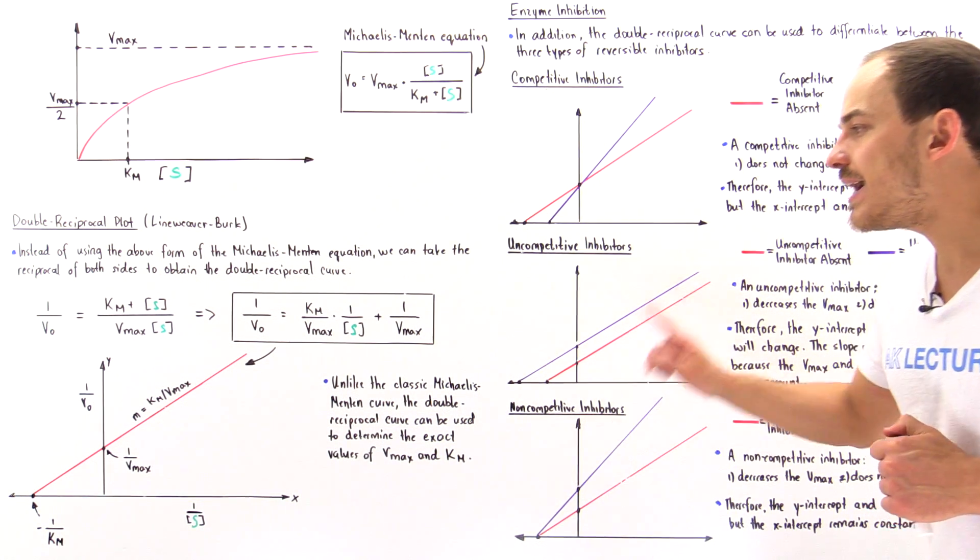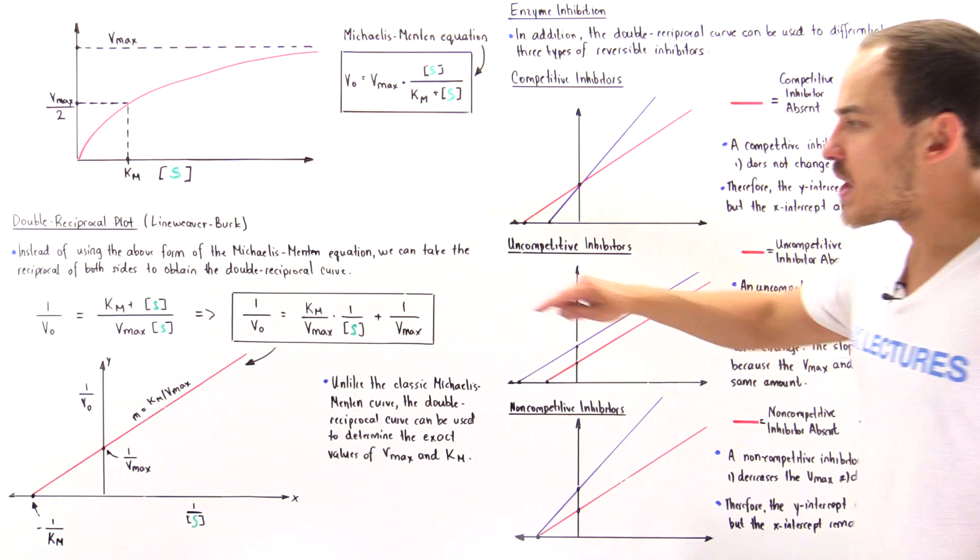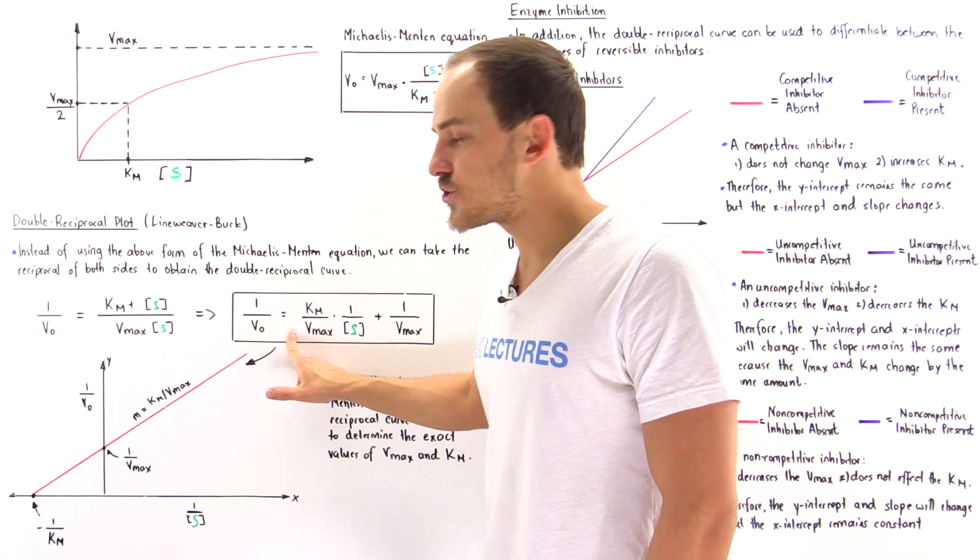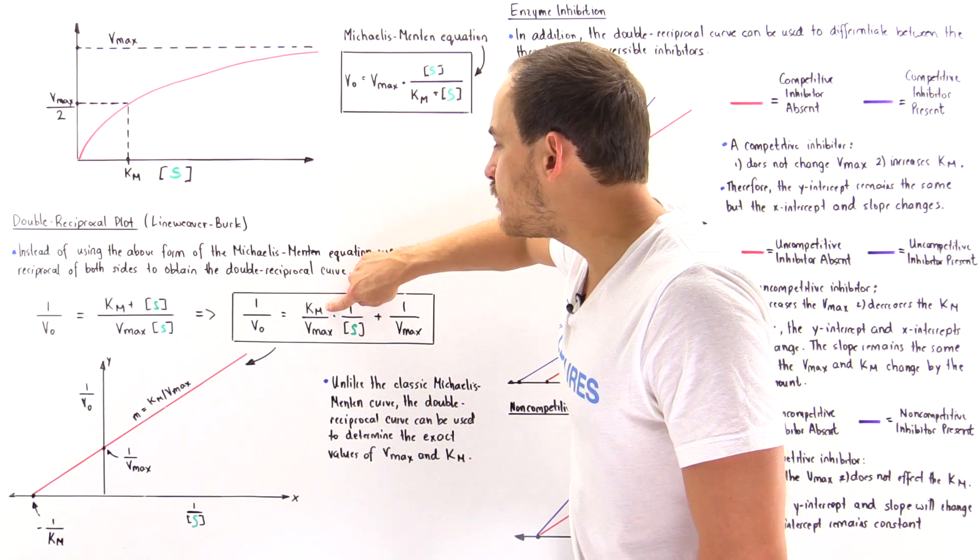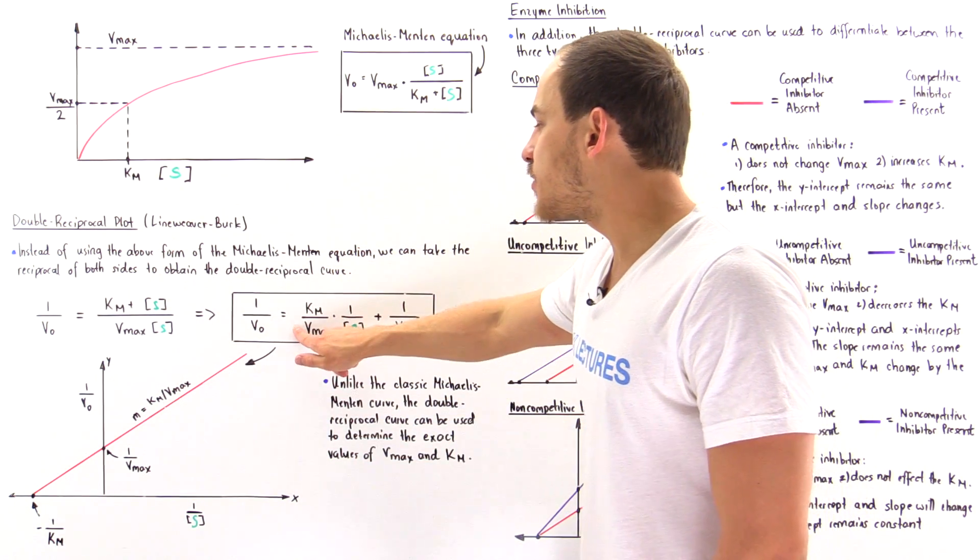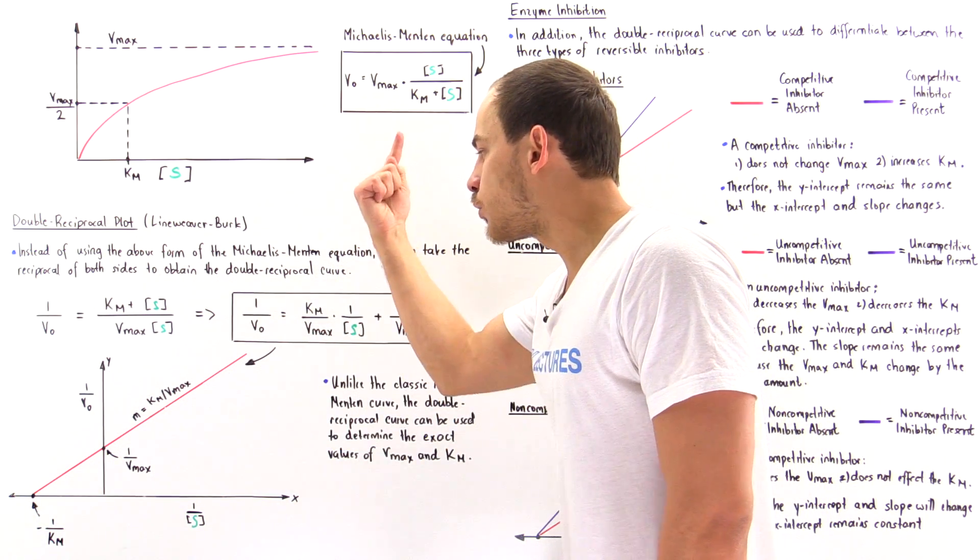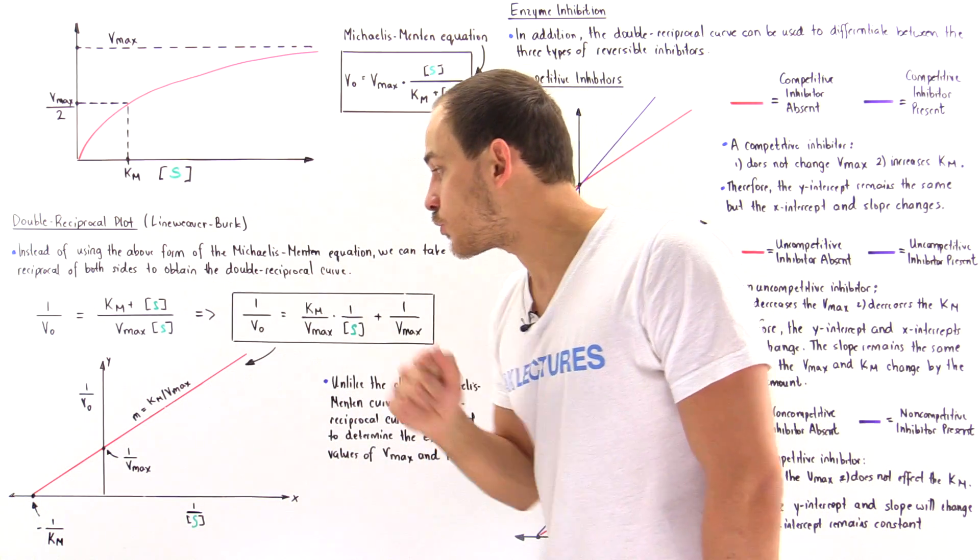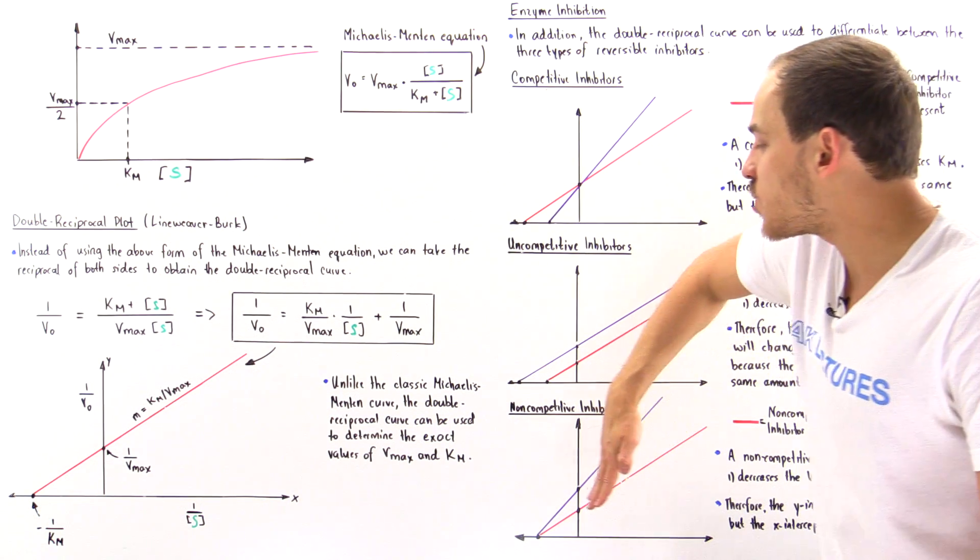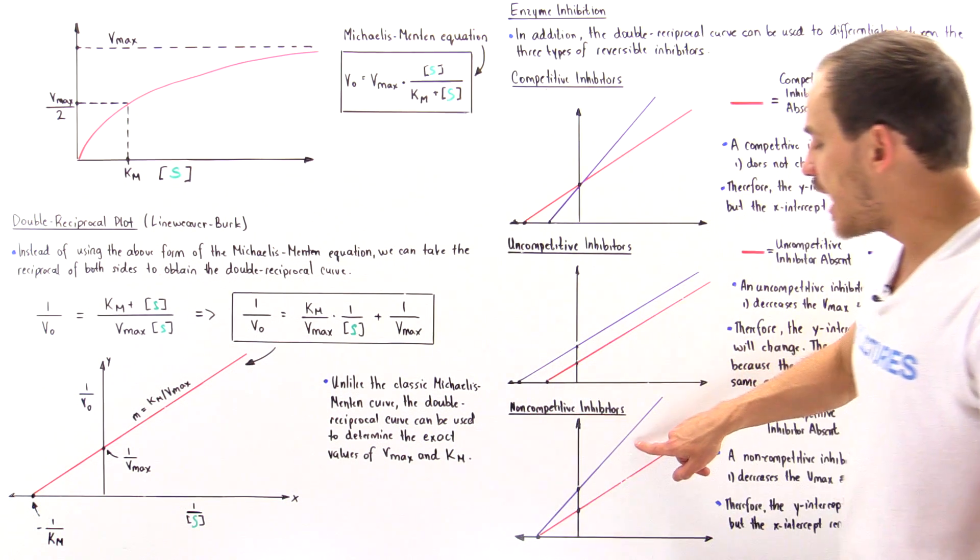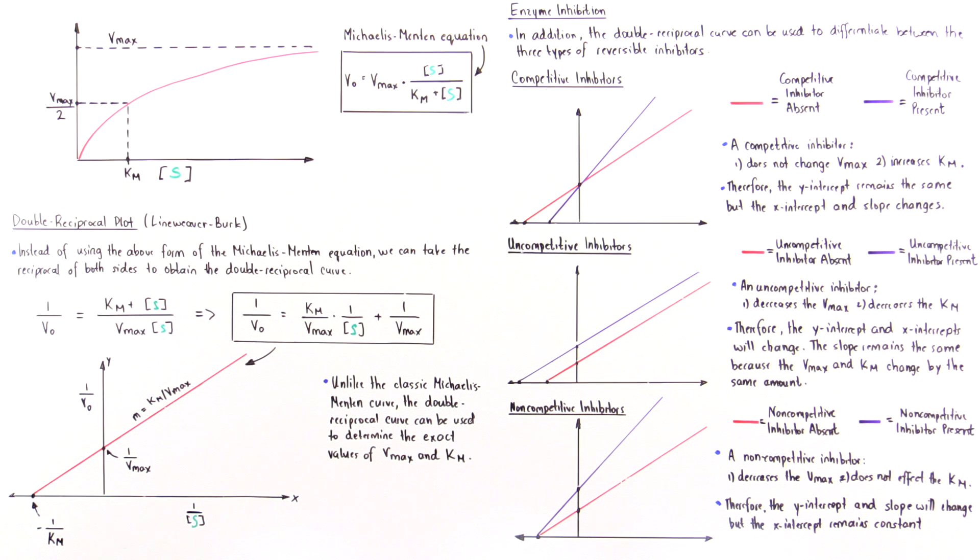Now, why does the slope actually increase? Well, the slope is Km divided by Vmax. If the Km value doesn't change, but the Vmax decreases, this ratio will increase. And if the ratio, the slope increases, that means we're going to have a steeper curve as we see in this particular case.